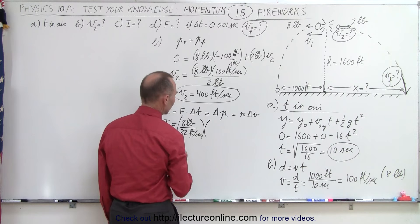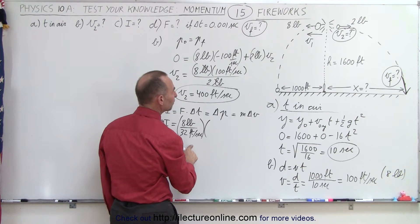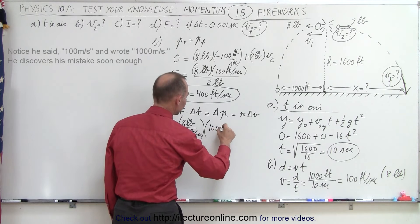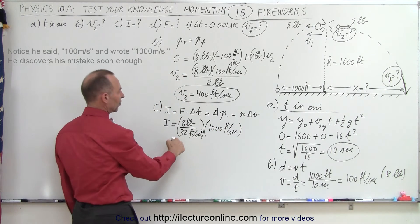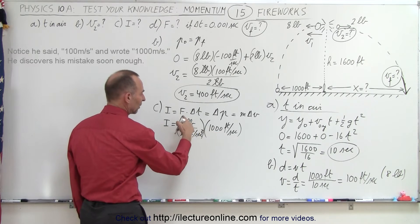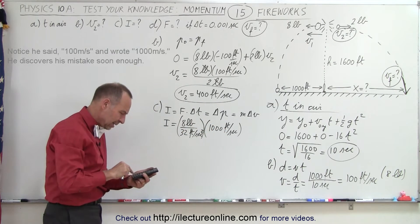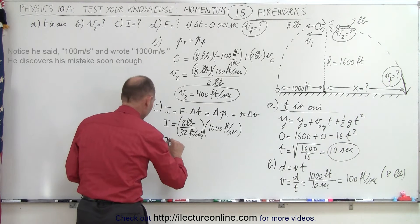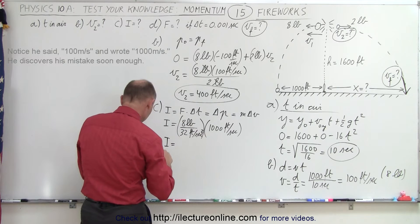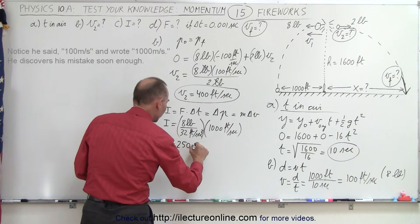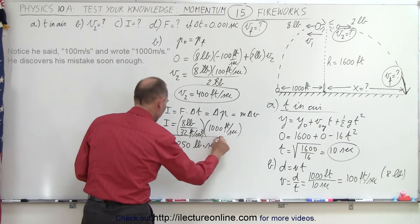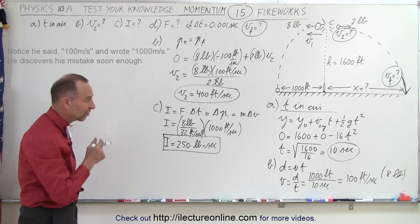Impulse equals eight pounds divided by 32 feet per second squared, times 100 feet per second, giving units of pounds times seconds. Eight times 100 divided by 32: that's 800 divided by 32, which equals 25. So the impulse is 25 pound-seconds. Those are the proper units for impulse.